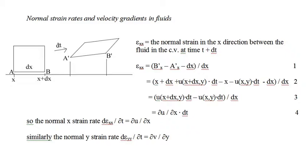As with elastic objects, normal strain in fluids is defined as the change in length of the stressed object divided by its original length. Calculating the normal strain in the x-direction, consider the side ab. The x-component of the length of a'b' minus the original length dx, divided by dx, gives the x-direction strain as shown in equation 1. Writing equation 1 using the u-velocity function and simplifying gives equation 3, and taking the limit as dx goes to zero gives equation 4. So the x-direction normal strain rate equals the partial derivative of u with respect to x, and similarly the y-direction normal strain rate equals the partial derivative of v with respect to y.